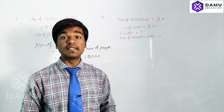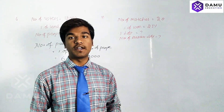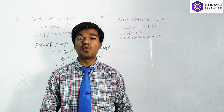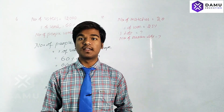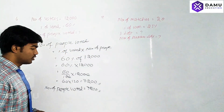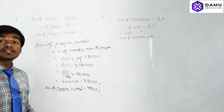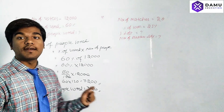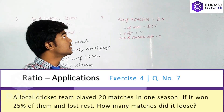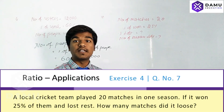We can also calculate how many people did not vote. That is 40% of the voters, which we get as 12,000 minus 7,200.